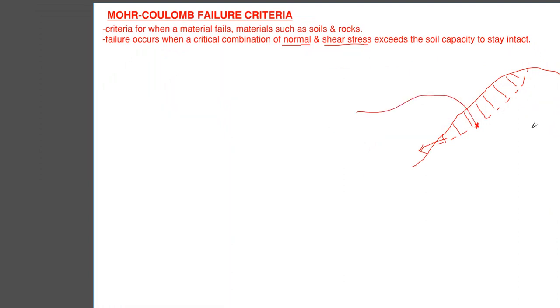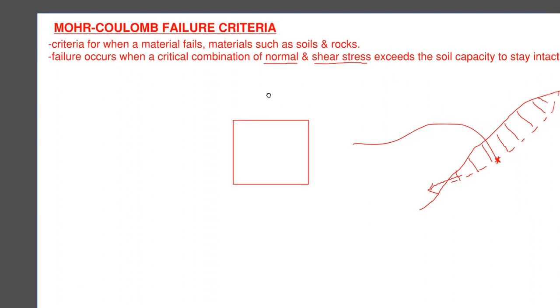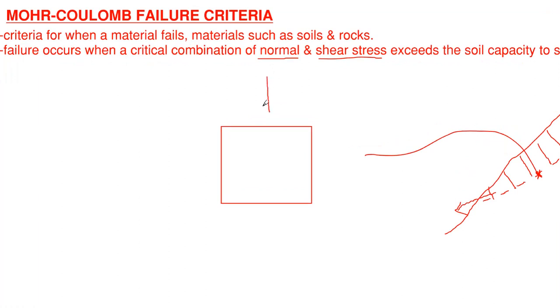I'm going to draw an element and the stresses that would act on this element. The normal stresses are essentially pressure - pressure that is exerted perpendicular to the plane. So if I have to draw that out, it would look something like this, which is perpendicular to each of the four faces of our element here.